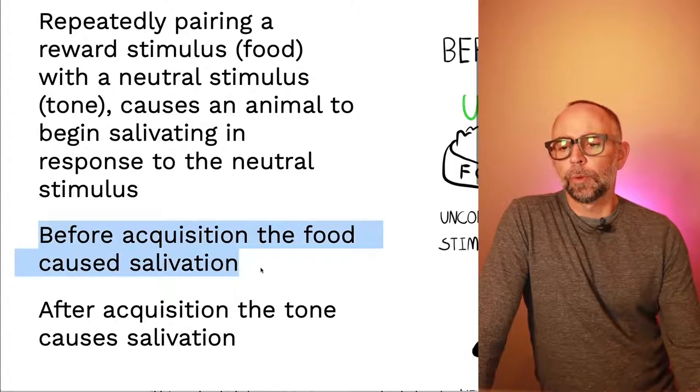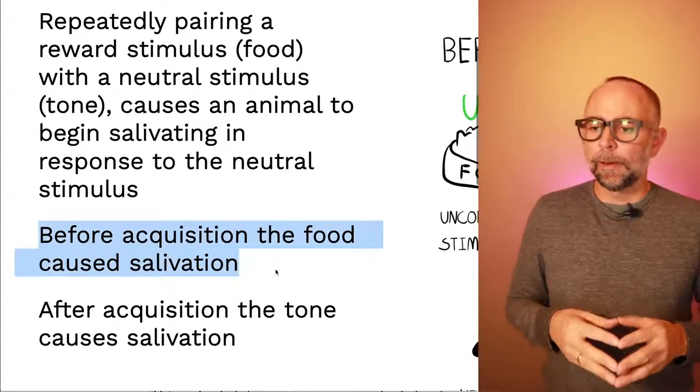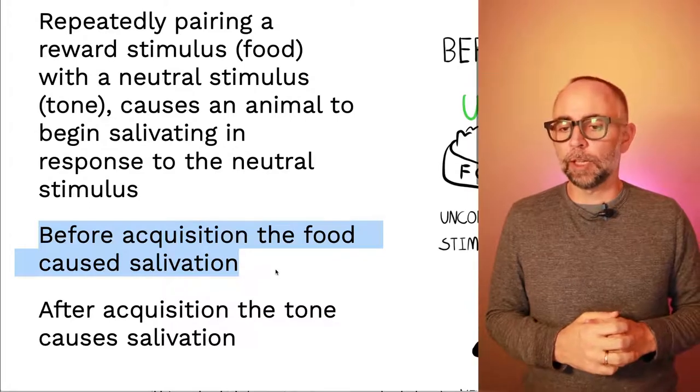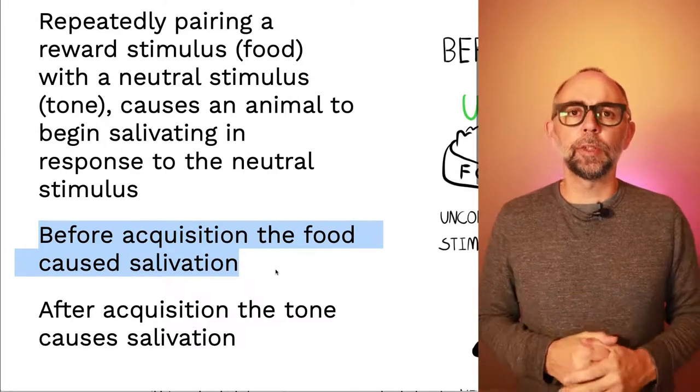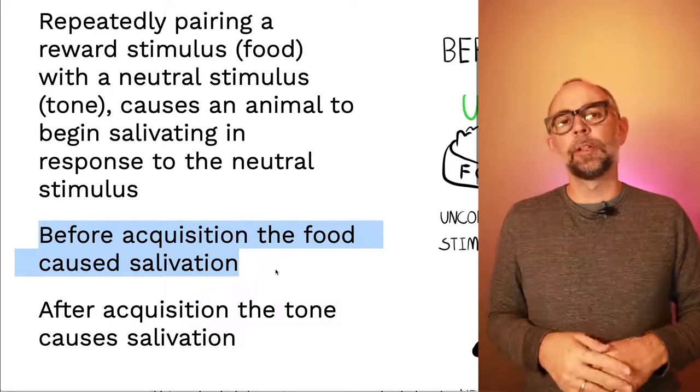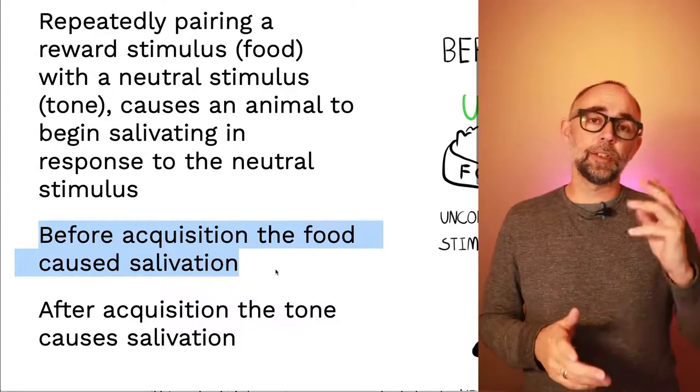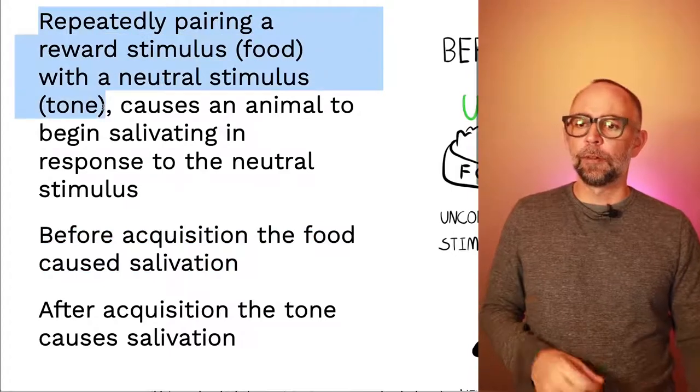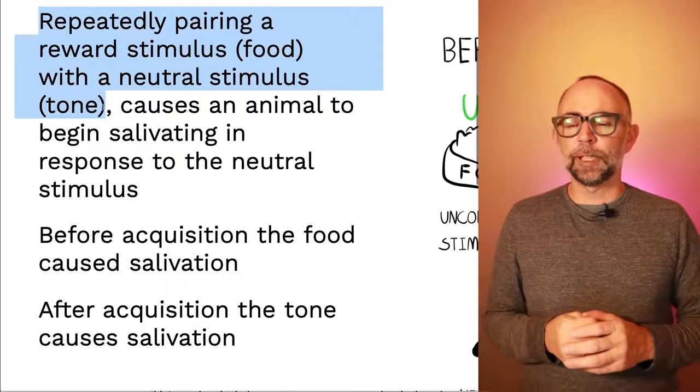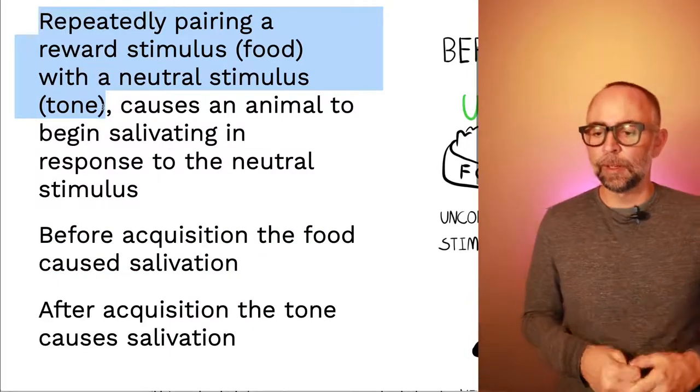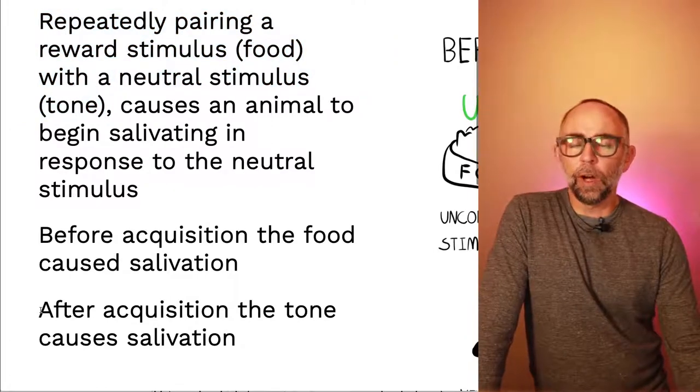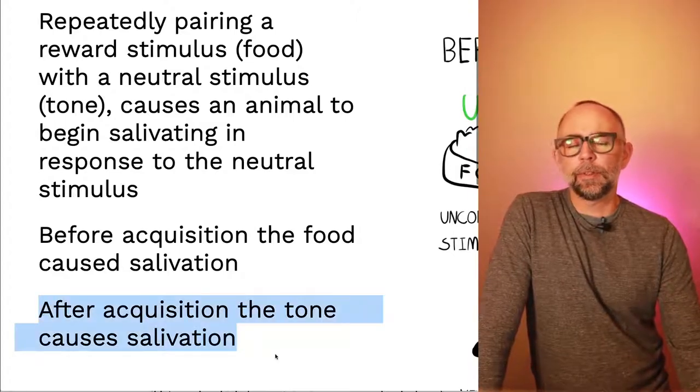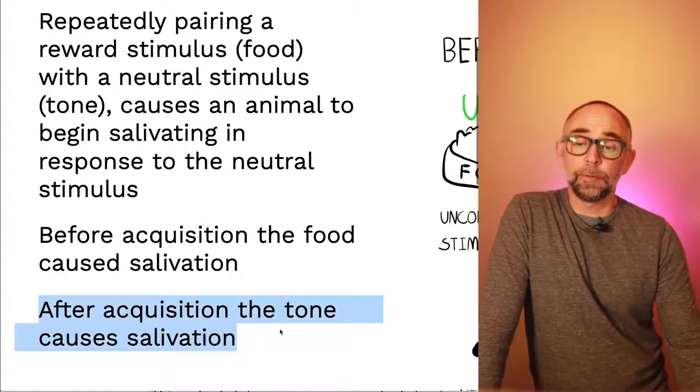Before you've done all these pairings, what we find is the food itself already causes certain reactions in the animal. If you give some food to a dog, it will start salivating. So the food seems to act as a stimulus that causes the dog to salivate. What's curious is that after you do this thing here, repeatedly pair reward stimulus, like food, with something else, like a tone, the tone can now cause the dog to salivate. So after acquisition, the tone causes salivation. And the food still does too.